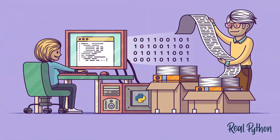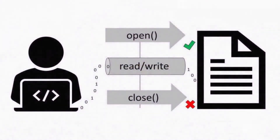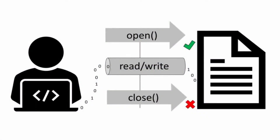To be able to work with files we need to follow three steps. The first step is opening the file, the second step is using the file — maybe to read it, write on it, or add some data — and the third step is closing the file. Now let's go to the terminal and practice that.